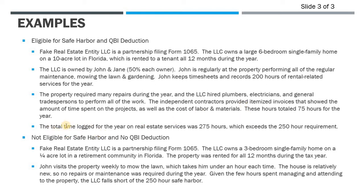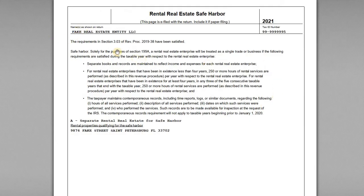Because the total hours logged performing rental services — by John and all the independent contractors and employees — was 275 hours, they're over the 250-hour requirement. Under these circumstances, they meet the safe harbor. With separate accounting records, contemporaneous records, and 250+ hours of rental services performed during the year, they can take the safe harbor. They file form 1065, attach the statement, and treat the earnings as qualified business income.